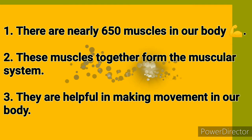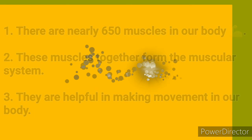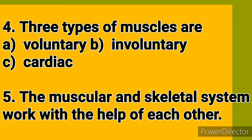The body consists of three types of muscles: voluntary muscles, involuntary muscles, and cardiac muscles. Involuntary muscles work without our control. The muscles of the heart are called cardiac muscles. The muscular and skeletal systems work with the help of each other.